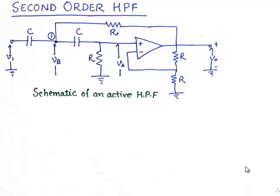Nevertheless, we can straight away dive into the schematic of an active high pass filter which essentially consists of this active component. It is an operational amplifier in non-inverting position.